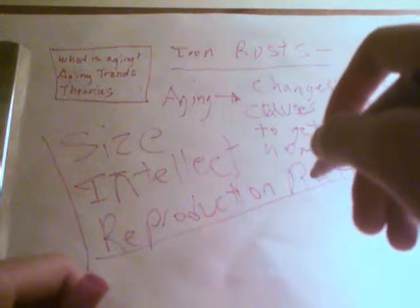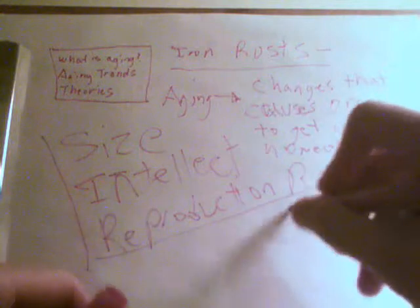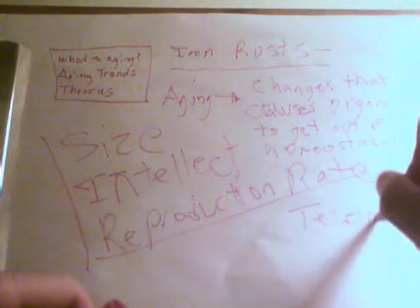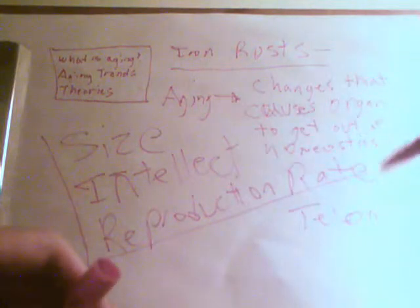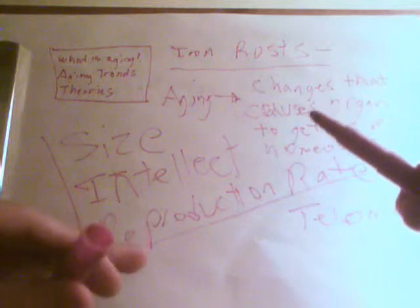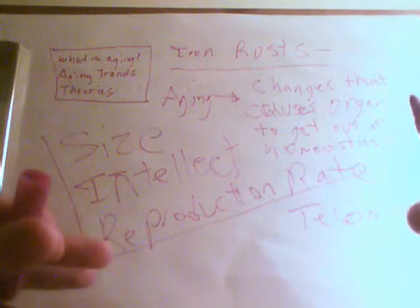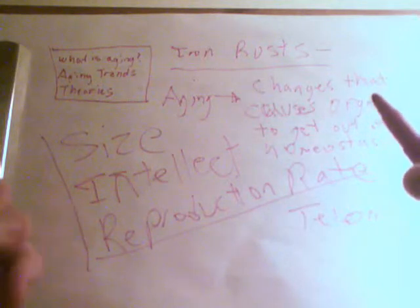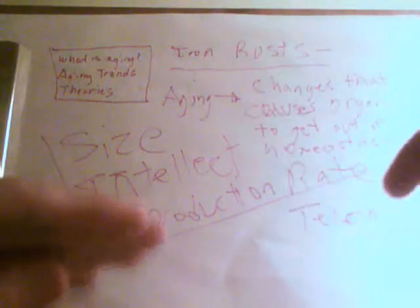Now for the theories of aging — there are a lot of them, and I'll cover a few that come to mind. The first is the telomere theory: the idea that telomeres determine the length of time an organism lives. As telomeres shorten, lifespan decreases. In humans, if your telomeres are too short, that affects the ends of the chromosomes, which is where the telomeres are located.